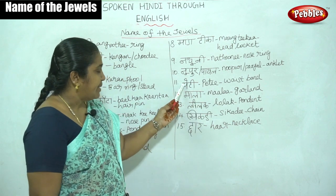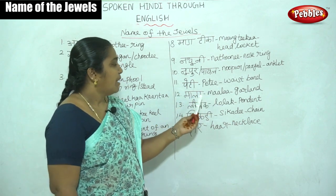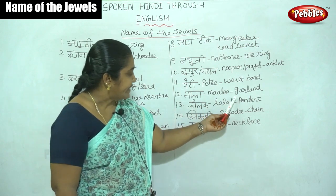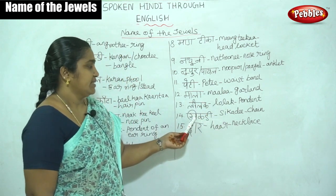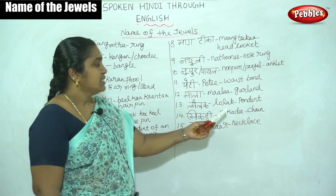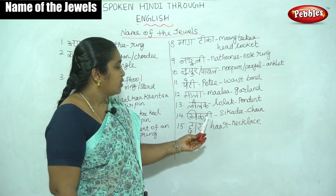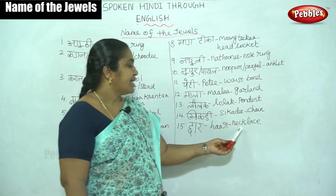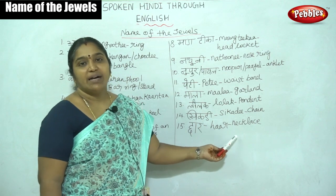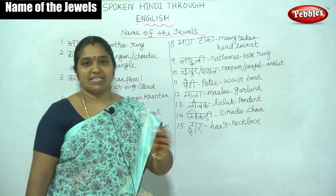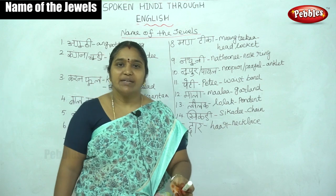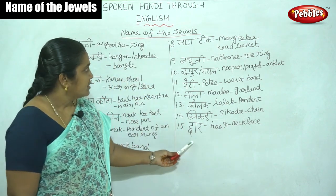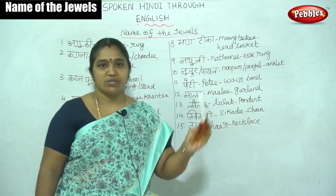Then Peti — waistband. Maala — garland. Then Lolak — pendant. Then Sikadi — chain. Meri sikadi bahut achi hai. Then Haar means necklace. Meri hira ki haar mujay bahut pasand hai — I like my diamond necklace. We can see the names, pronounce them, and use them.